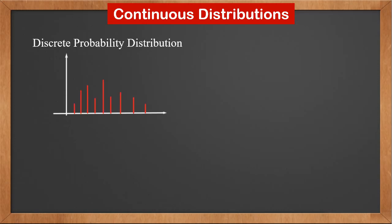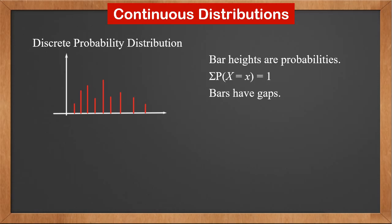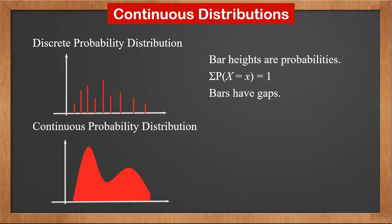We know if we put probabilities of a discrete distribution in a graph, the probabilities become bars. Their heights represent probability values and add to 1. There are gaps between those bars because probabilities can only happen at certain values. If we put those bars really close together so that there are no gaps between them anymore, this becomes a continuous distribution.